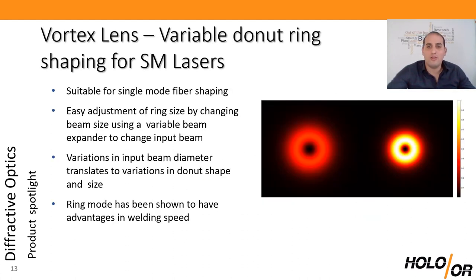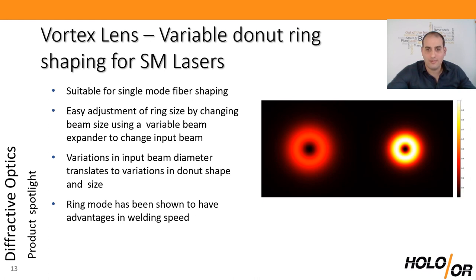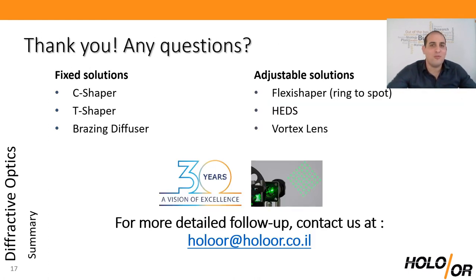Finally, for single-mode adjustable solutions, we offer vortex lens donut generators or vortex phase plates, suitable for single-mode lasers. By changing the beam diameter they allow one to adjust the size of the donut and the hole proportionally — you can easily scale it up or down by putting a variable telescope in front of your vortex lens element, giving you an adjustable diameter ring on the surface. Thank you very much for your time. I would love to answer any questions about adjustable shapers, fixed shapers for welding or cutting, or any other application you're interested in.